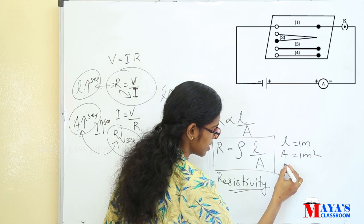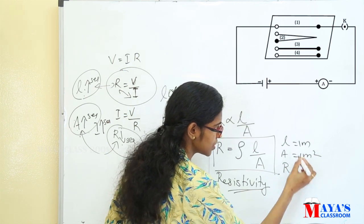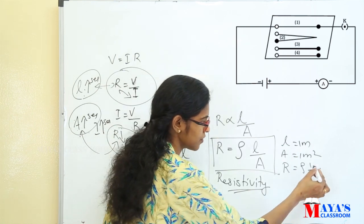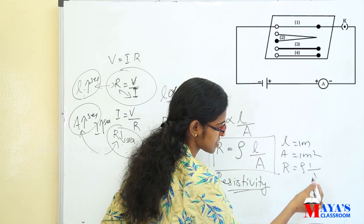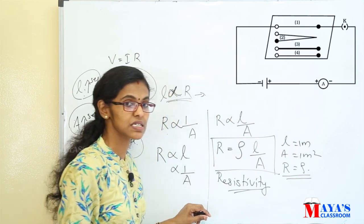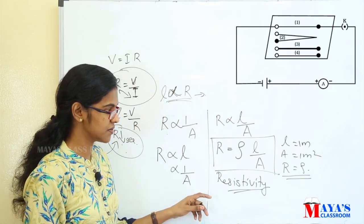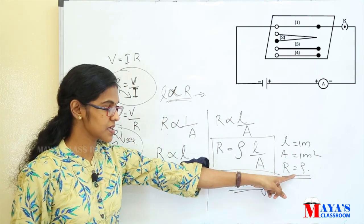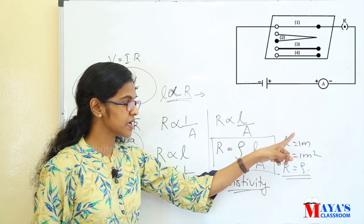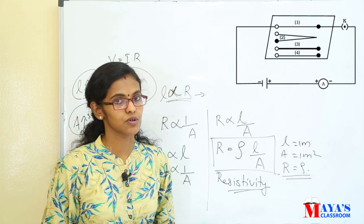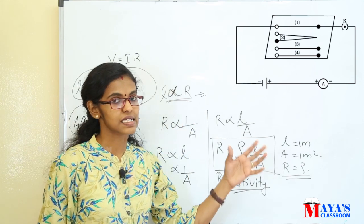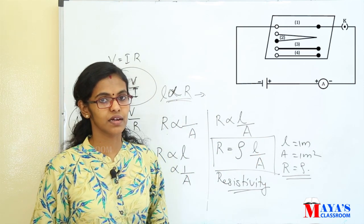If the length of the conductor is 1 meter and the area of cross-section is also 1 meter square, the resistance becomes R is equal to rho. Therefore, resistivity of a substance is the resistance of a conductor when its length is 1 meter and its area of cross-section is 1 meter square.